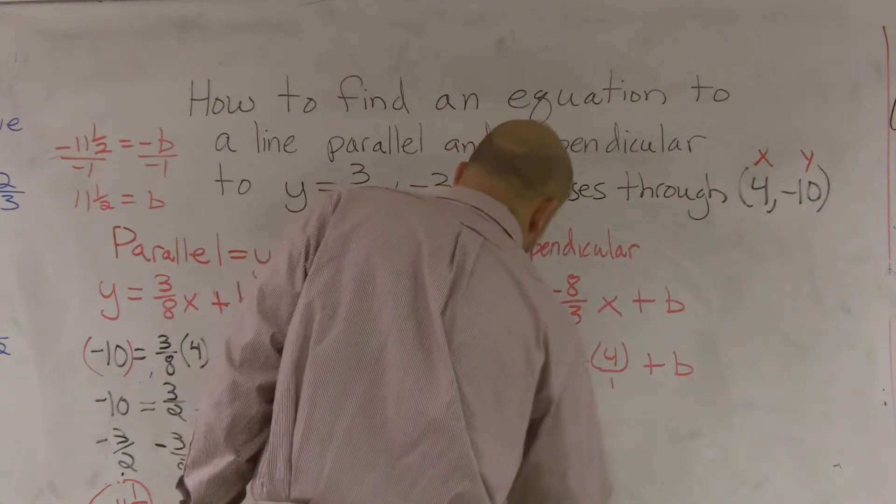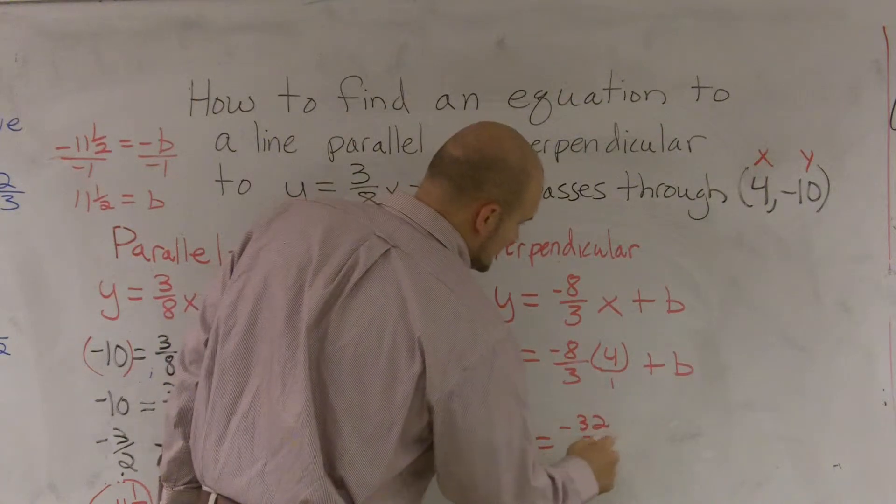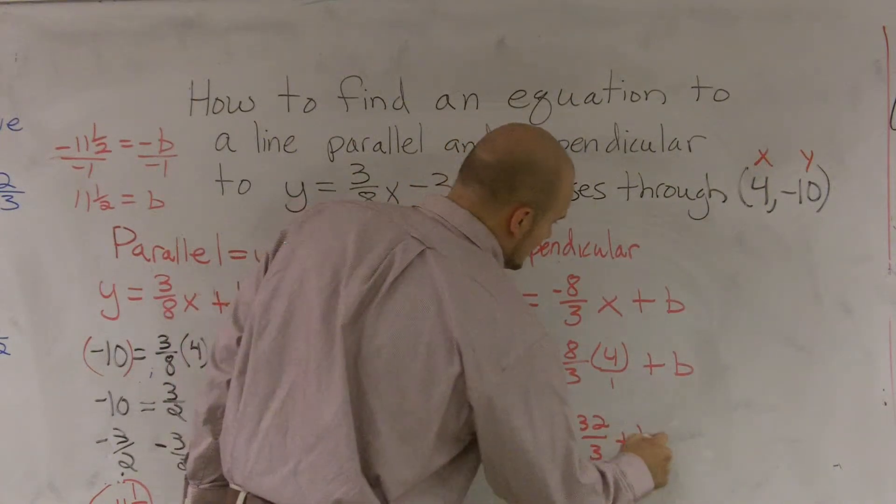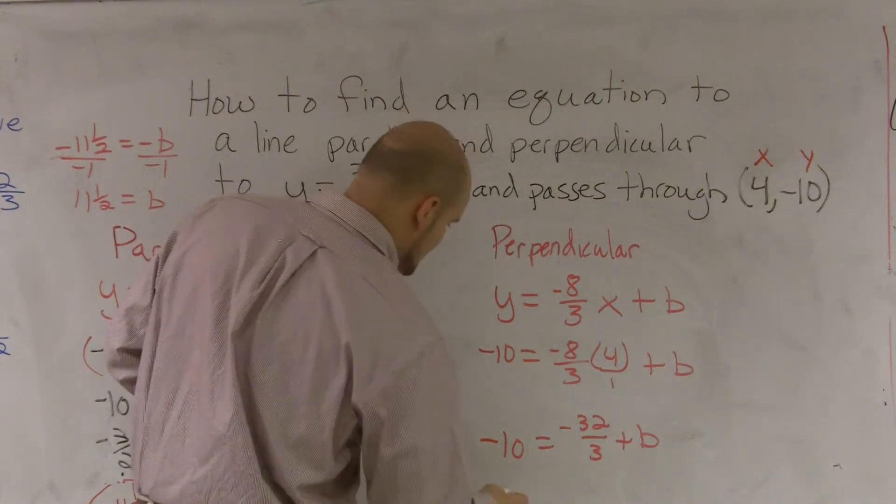So it would be negative 10 equals negative 32/3 plus b. This can also be written as negative 10 and 2/3.